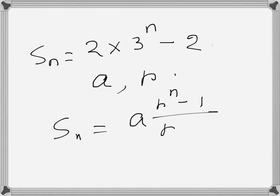Like that. So we will equate this one to this one, so that will be a times r to the power n minus 1 over r minus 1 is equal to 2 into 3 to the power n, sorry, 2 into 3 to the power n minus 2.